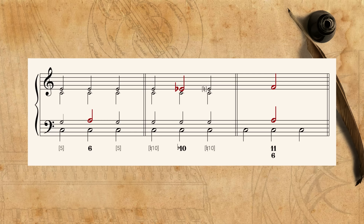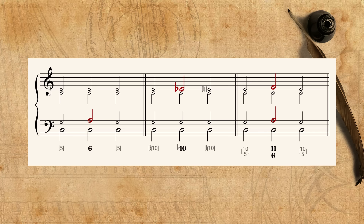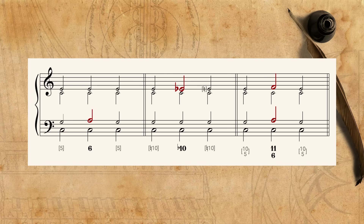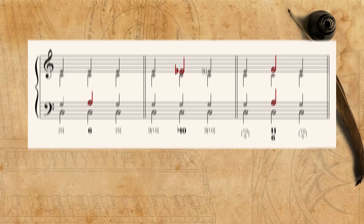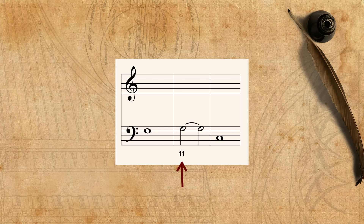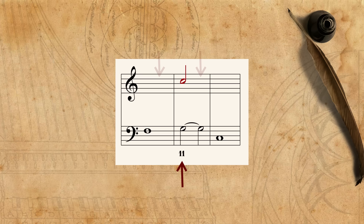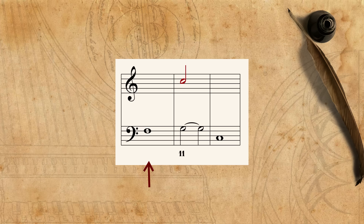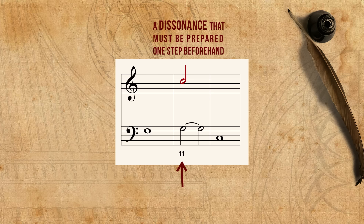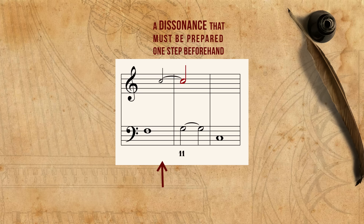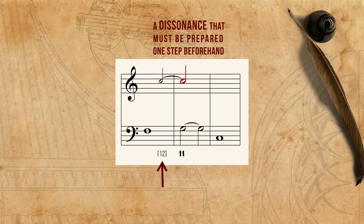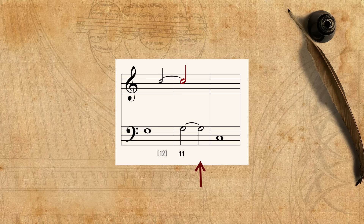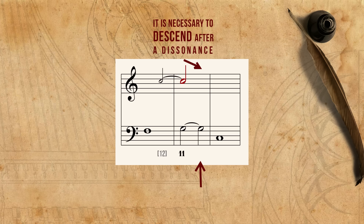So, while the figures give information about the specific note they refer to, they also imply information about the notes surrounding it, even if these have no figures. For example, one figure of an eleventh explicitly implies only one note, but implicitly two other notes. On the F there are no figures, so we need to put consonances somewhere above the bass, but since the eleventh on the next note is a dissonance that must be prepared one step beforehand, it is implied that one of these consonances must be exactly a twelfth above the F — an octave and a fifth. The following note is tied to the figured note, but since there is no figure above it, a consonance is called for. And since it is necessary to descend after a dissonance, we know exactly what consonant note should come: a tenth.